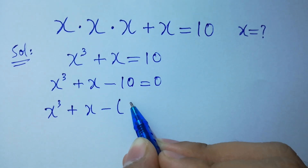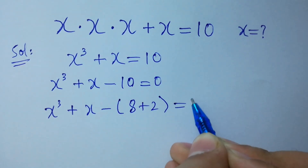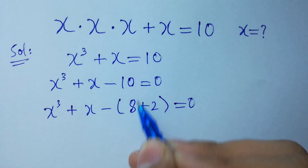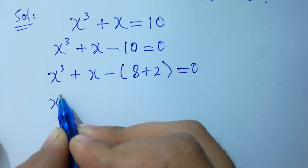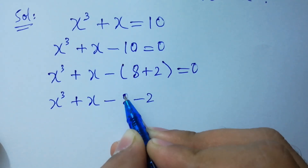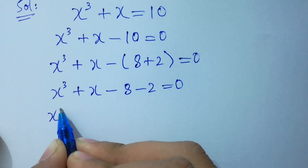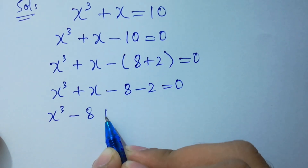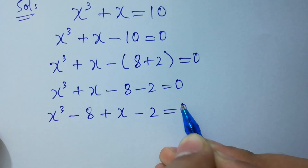10 is 8 plus 2. 8 plus 2 is equal to 10, and 8 is 2 cubed. So we rewrite: x cubed plus x minus 8 minus 2 is equal to 0.